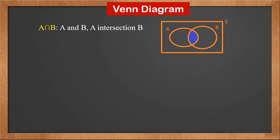This upside down U symbol between A and B means A and B, or A intersection B. It is the common part between A and B, which means both event A and B occur.